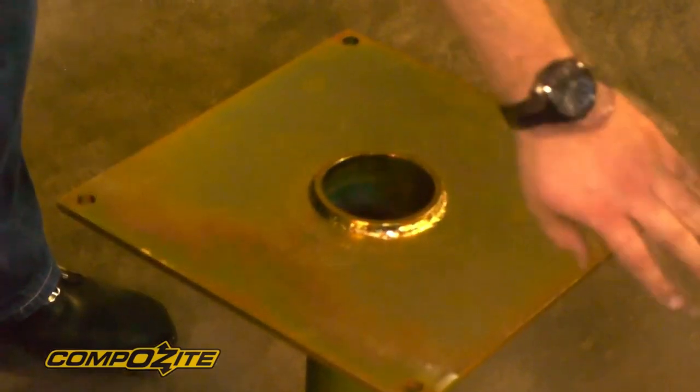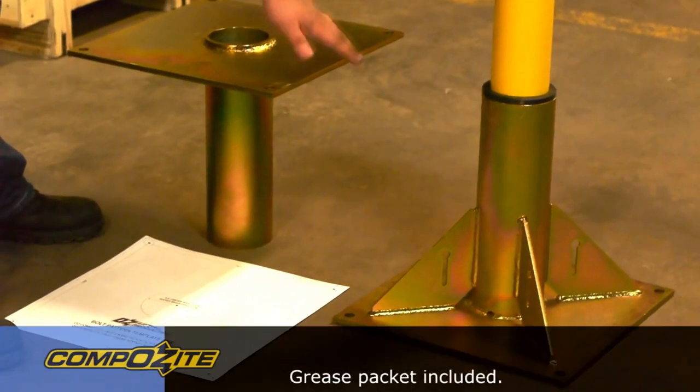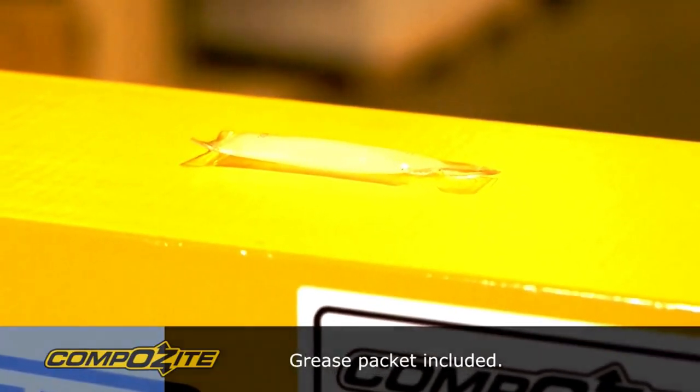You can also grease the bottom of the crane or put a little dab of grease in each base just to make that crane rotate a little smoother. And that's pretty much the difference between the two.